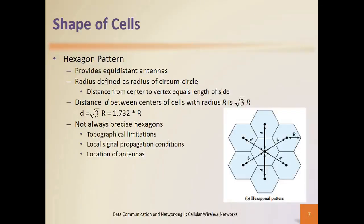In the cellular network, hexagon patterns are much more preferred because in general, most geographical coverages are not square demarcations. They have different shapes, so coverage-wise, the elimination of topographical limitations is a good reason to opt for cellular.